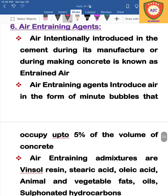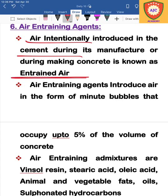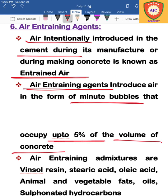The next admixture is the air-entraining admixture. What it does is introduce microscopic air bubbles into the cement matrix. The air-entrained admixture introduces approximately 5% air into the concrete, which is made possible through this process.